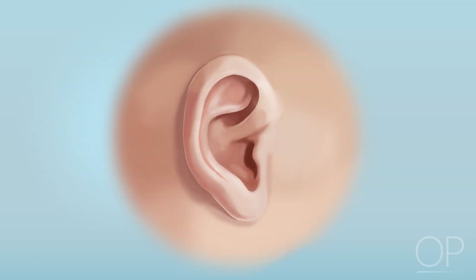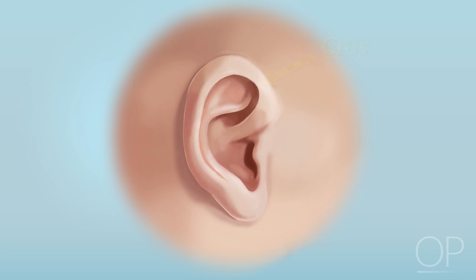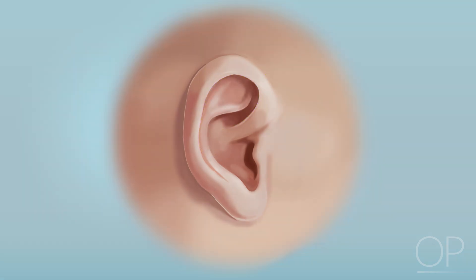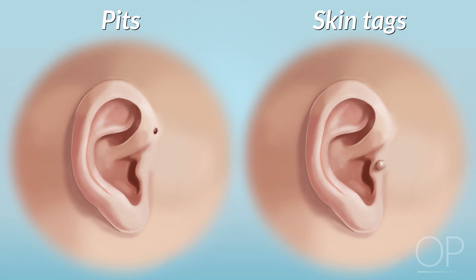Next, assess ear formation. Do the ears have a complete rim of skin surrounding them, called the helix? Does the skin inside the helix, called the crura, have folds, or is it unusually smooth? Finally, check the skin beside the ear's tragus for pits and skin tags.